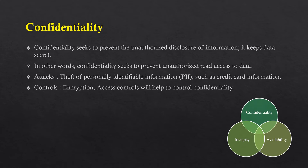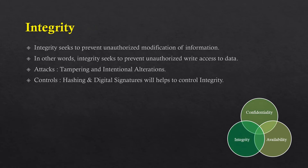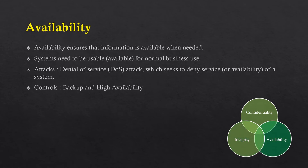Some controls to safeguard confidentiality would be encryption and access control. Integrity means protecting data from unauthorized modifications, which means preventing unauthorized write access to the data. Tampering and intentional alterations are examples of integrity attacks. To protect integrity, we can apply hashing and digital signature controls.